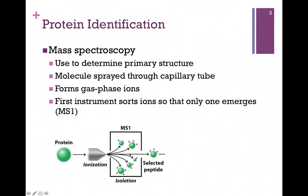Our first instrument, MS1, sorts the ions so that only one emerges. So we only have one selected that we're going to analyze each time.